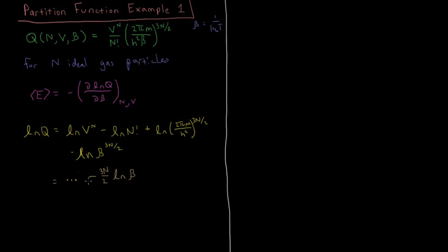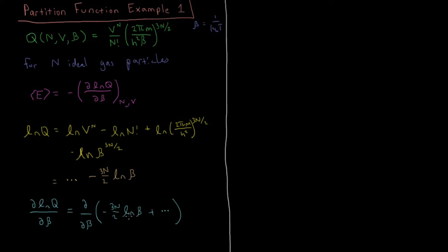Now when we take the partial derivative of ln(Q) with respect to beta, all the other terms without beta dependence give zero. The only term of interest is minus 3N/2 times ln(β). The derivative of ln(β) with respect to β is 1/β, carrying the factor of minus 3N/2, giving us minus 3N over 2β.